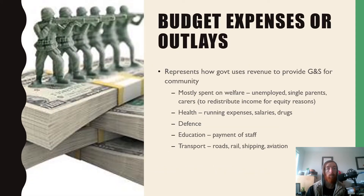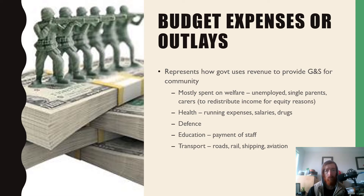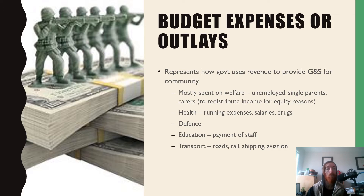Budget expenses or outlays basically represent how the government uses their revenue to provide goods and services for the community. Most of it is spent on welfare — a ridiculously large portion — and this is to redistribute income for equity reasons. The reason we have a progressive tax system where the rich are taxed more than the poor is so that poorer income families can have a higher standard of life.